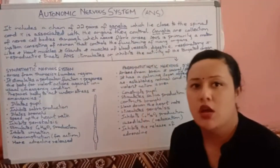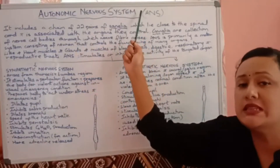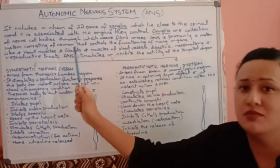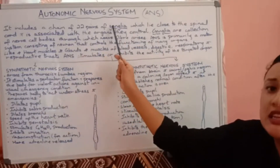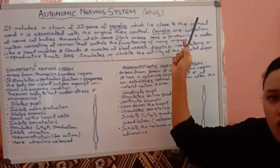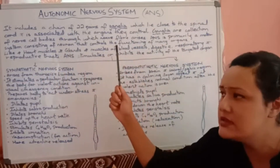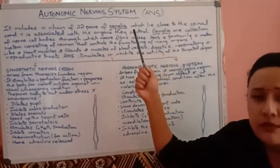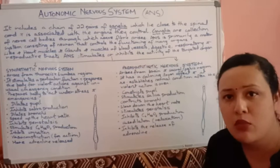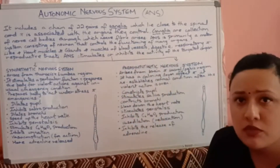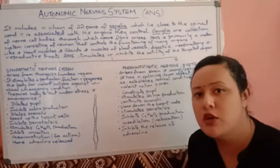Now the next topic: the autonomic nervous system, also known as ANS. This system includes a chain of 22 pairs of ganglia, which lie close to the spinal cord and are associated with different organs. These 22 pairs of ganglia are responsible for controlling the internal organs of our body.